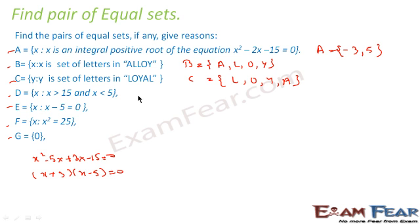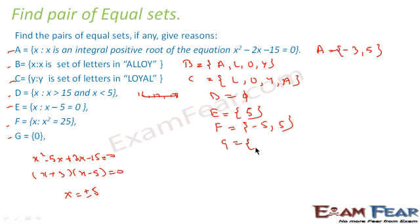D is, it says x is greater than 15 and x is less than 5. So there is no element actually because if it is greater than 15, so we have something like 16, 17, 18. But again, we are saying less than 5, so there is no element. So D is equal to phi, empty set. Similarly, E, x minus 5 is equal to 0. So that means x is equal to 5. So E has element 5. For F, it says x squared is equal to 25, so F will have element minus 5 and 5. And G is already in roster form, has the element 0.